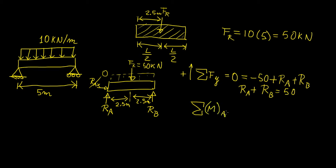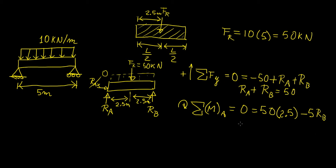Taking the sum of moments about A, with clockwise as positive, we have the 50 kN force times the distance of 2.5 meters rotating clockwise, and Rb at 5 meters from A rotating counter-clockwise, so that's negative. So we get: 50 × 2.5 − 5 × Rb = 0. Therefore Rb equals 50 times 2.5 divided by 5, which gives us a reaction force at B of 25 kilonewtons.